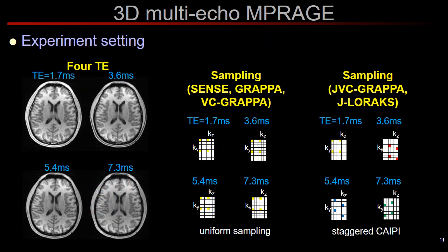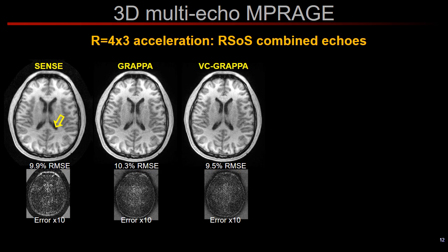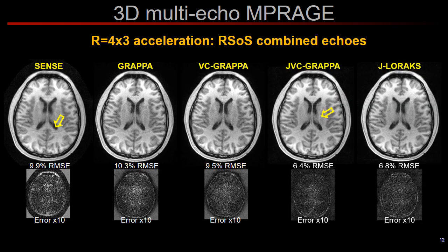Next, let's look at a 3D multi-echo MP-RAGE acquisition with 4 echoes, where we can accelerate in both phase encoding axes. For our joint reconstruction strategies, we also make use of staggered controlled aliasing patterns. At 12-fold acceleration, conventional SENSE, GRAPPA, and virtual coil GRAPPA yielded about 10% RMSE with noise amplification and some aliasing artifacts. JVC-GRAPPA largely improved the error metric by mitigating noise amplification, but suffered from some structured aliasing artifact, which was mitigated in the J-LORAX reconstruction.